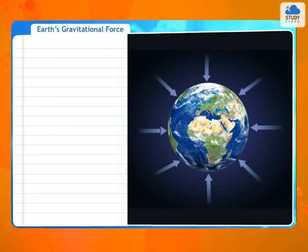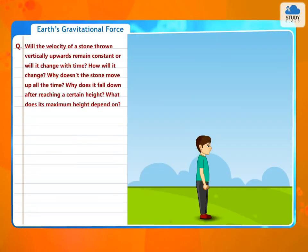Earth's gravitational force. Will the velocity of a stone thrown vertically upward remain constant or will it change with time? How will it change? Why doesn't the stone move up all the time? Why does it fall down after reaching a certain height?